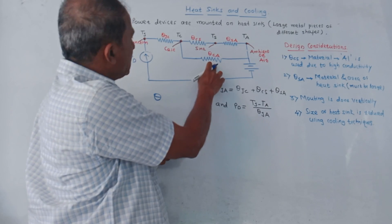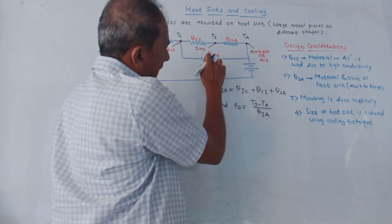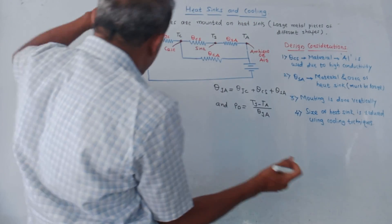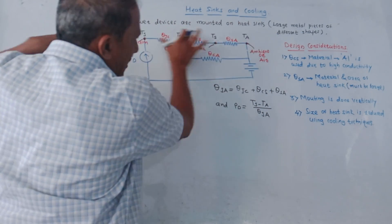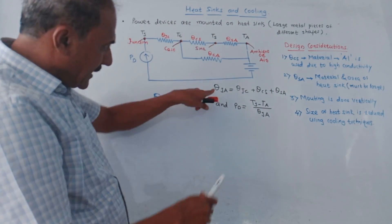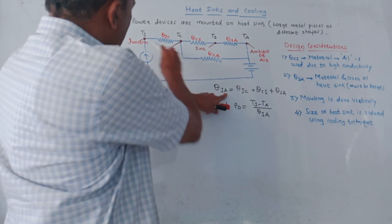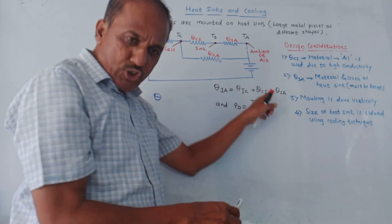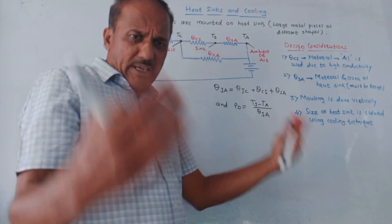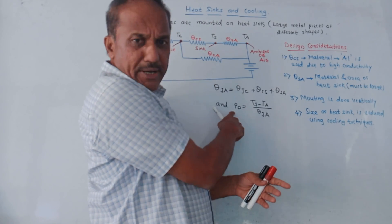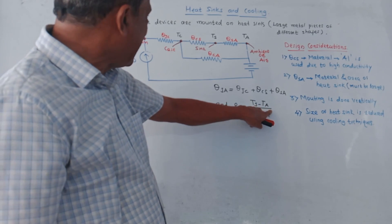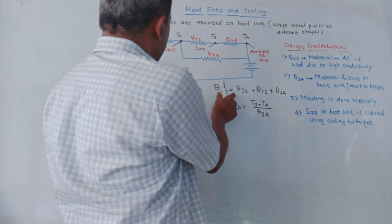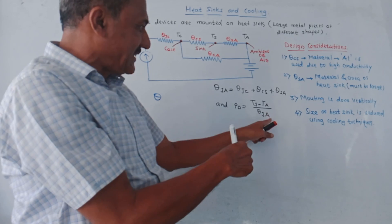The thermal resistance between case and ambient is theta CA. The total thermal resistance from junction to ambient is the addition of all: theta JA equals theta JC plus theta CS plus theta SA. Similar to the electrical equivalent, we can write the equation for power dissipation PD as TJ minus TA divided by the total thermal resistance theta JA.